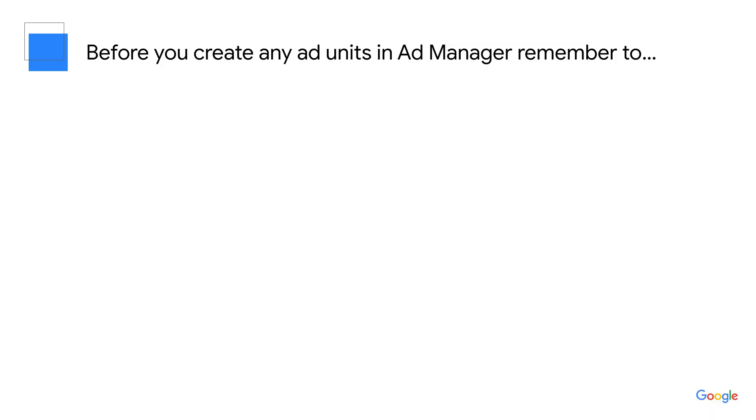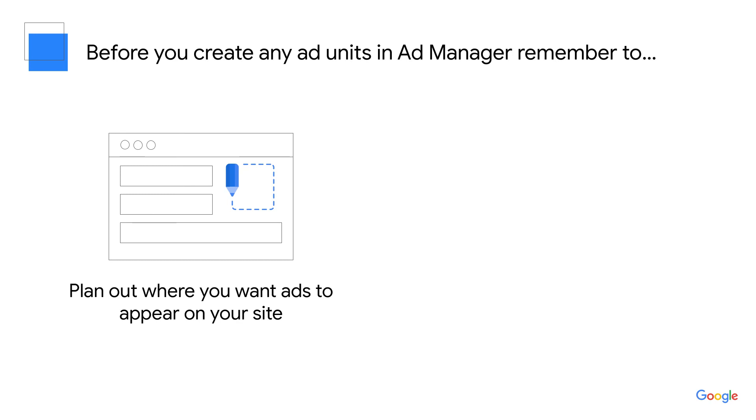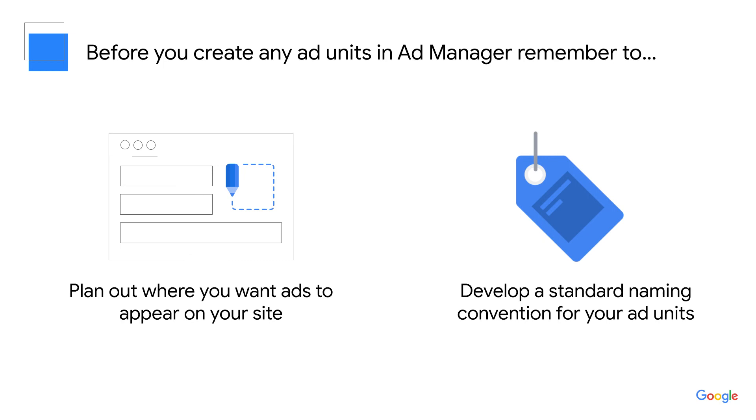So remember, before you do anything in Ad Manager, make sure to plan out where you want ads to appear on your site. Write it down and develop a standard naming convention. This will help you in the long run when you start running reports and analyzing your ad inventory. Thanks so much for watching this training today. To learn how to create ad units in Ad Manager, watch our next video. For more support, you can find links to our help center in the description below. Make sure to subscribe by clicking the subscribe button below so you can stay up to date on our latest tips for Ad Manager. See you next time!